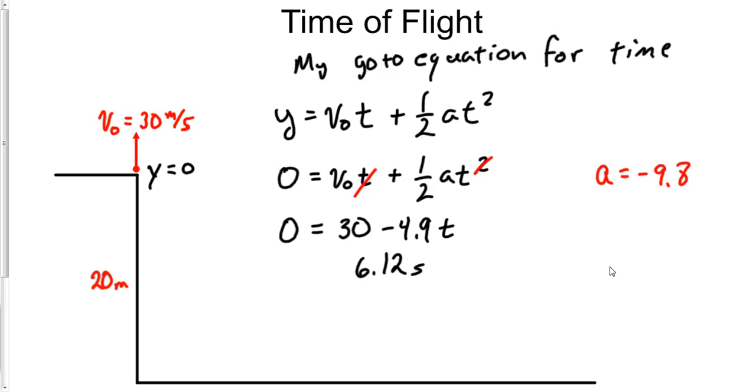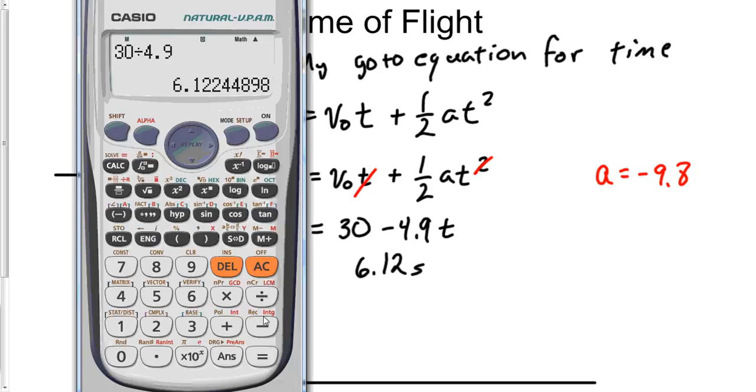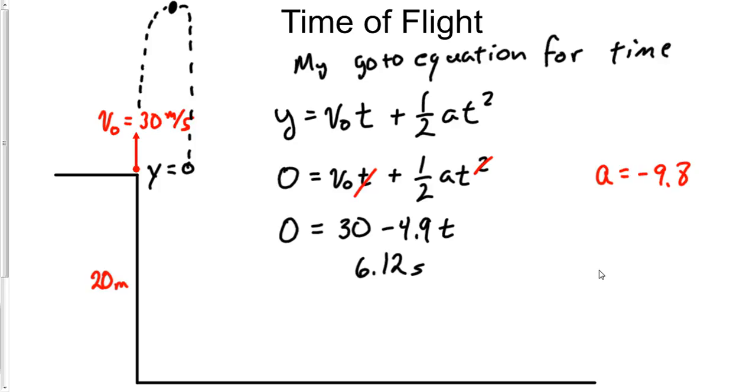So that means it takes 6.12 seconds for this object to go up to the top, stop, and then fall back down. That is what this function has told you—it takes 6 seconds to make this, so that's 6 seconds to go up and back to this original height. So how long does it take to go up to the very top? Well, I love that question: divided by 2 equals 3.06. That means to the top it takes 3.06 seconds, because it's going to take 3 seconds to go up and 3 seconds to go down.